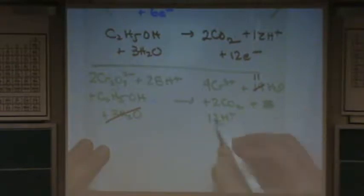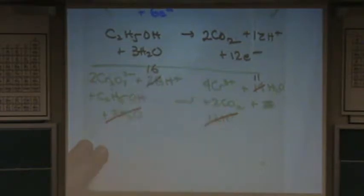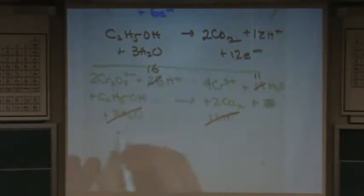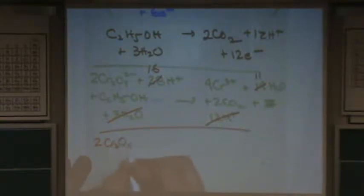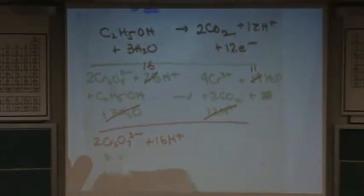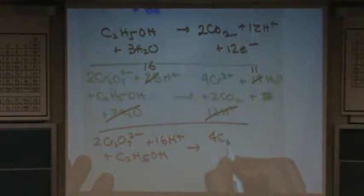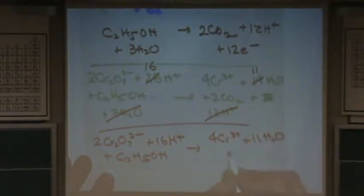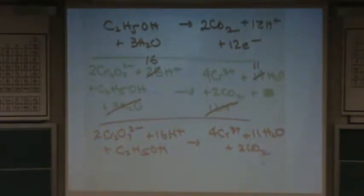H plus. There's 12 here with 28 here. 28 from 12. What's that? 16. Good. 16. I think that's it. So here's the acidic answer. Two dichromates plus 16 H plus plus an ethanol goes to four chromium 3+ ions plus 11 waters plus two carbon dioxide.